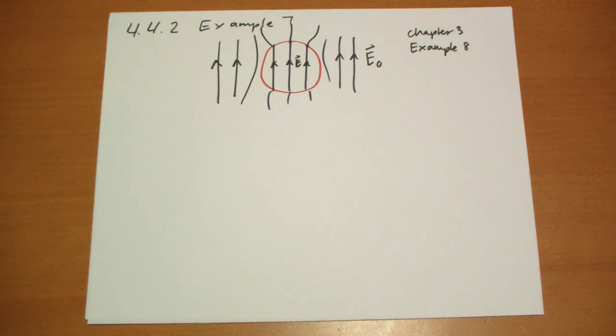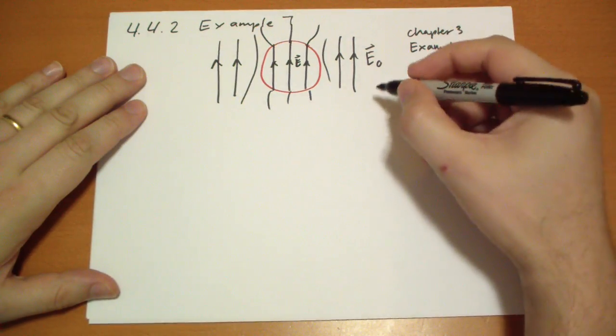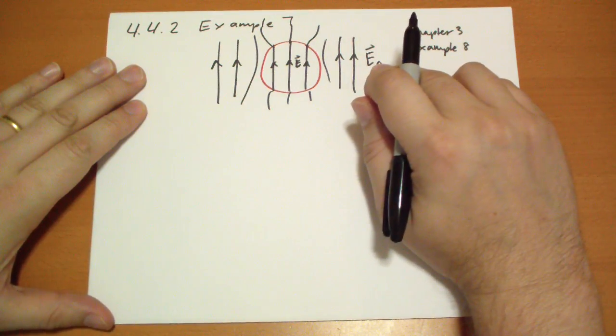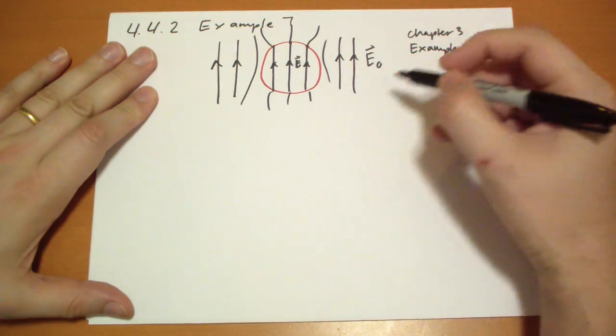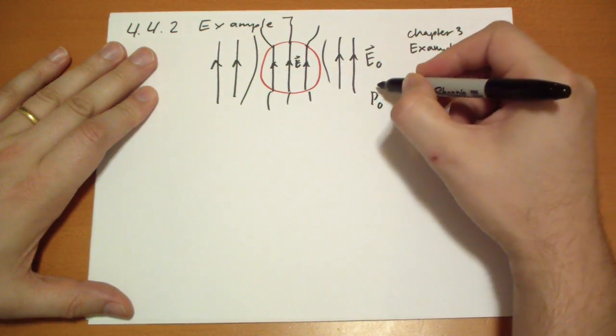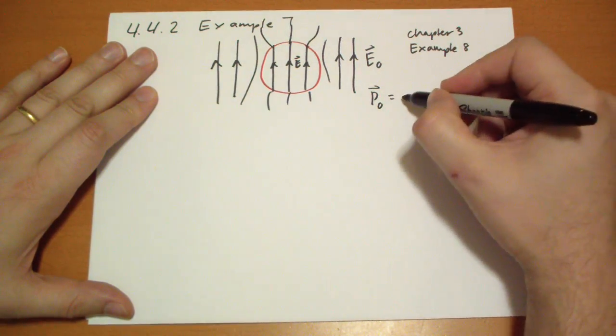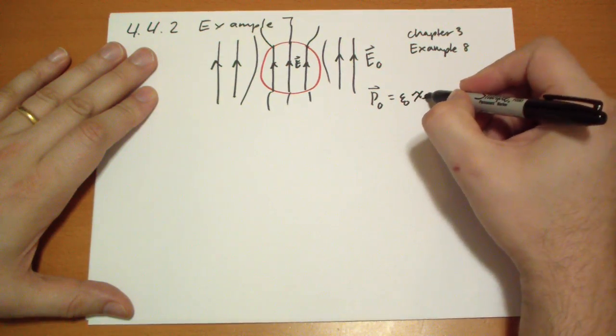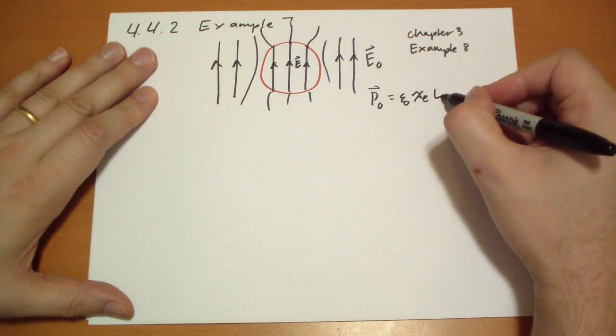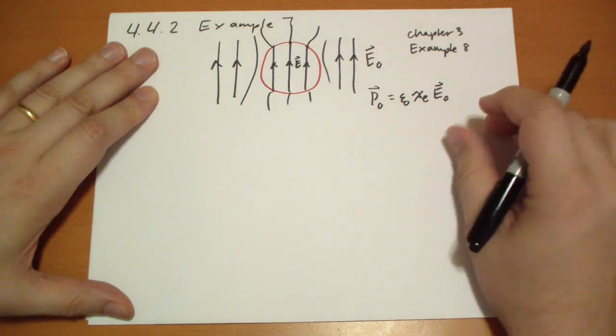One way to approach this problem, and it actually works for this problem, is you say, if we have an electric field inside the sphere of E₀, what's the polarization of the sphere? So we can write, the polarization of the sphere, due to E₀, is going to be, it's a linear dielectric, so ε₀ χₑ of the initial electric field.